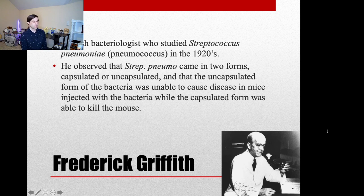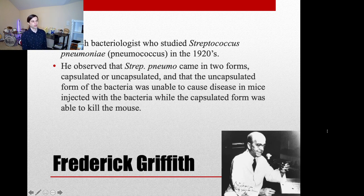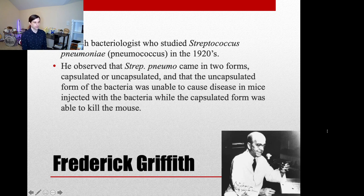I've talked a little bit about bacterial capsules before — that hard coating on the outside of bacteria that can keep them from being eaten, or phagocytized, by the immune system. Frederick Griffith was a British microbiologist working in the 1920s with the bacteria Streptococcus pneumoniae, at the time known as pneumococcus. He noticed this bacteria came in two different forms: one that had a capsule and one that didn't. The capsulated form was able to kill its host, while the non-capsulated form was not. This is one of the first discoveries in bacterial genetics — how DNA is transmitted between species and how it's heritable.